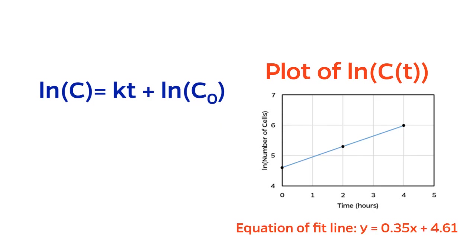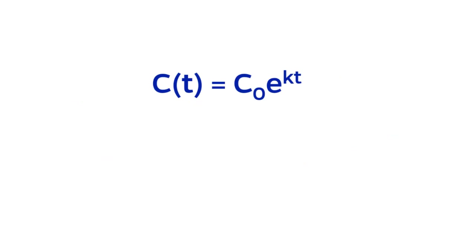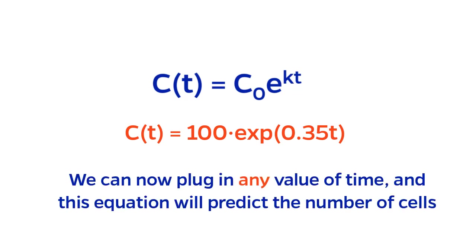By calculating slope and setting it equal to K, and calculating the intercept and setting it equal to ln of C0, I can obtain the values of both parameters. Going back to the original equation, I now have an expression for the number of cells as a function of time. I can plug in any value of t that I want, and I can calculate the corresponding number of cells that I'd expect.